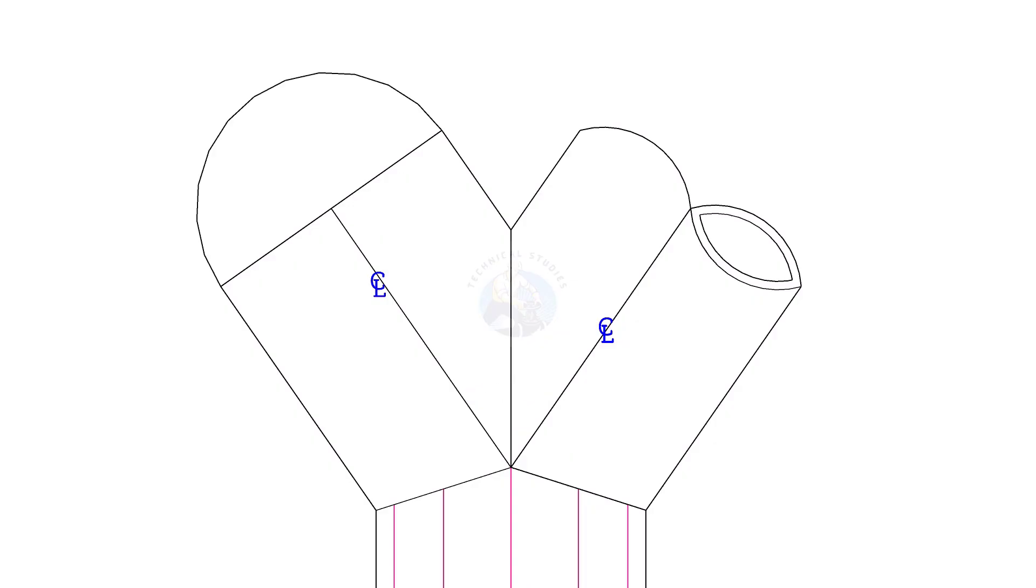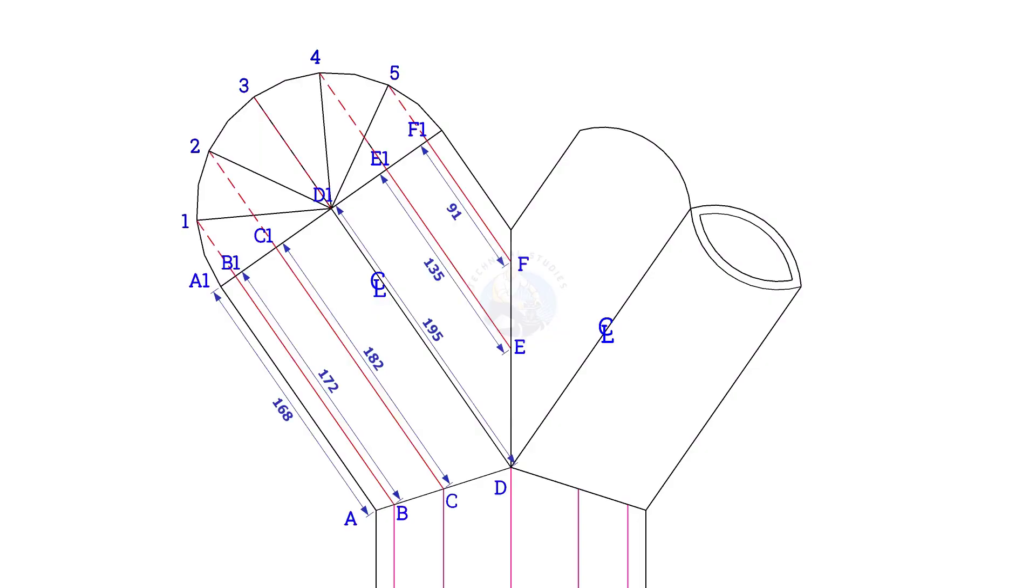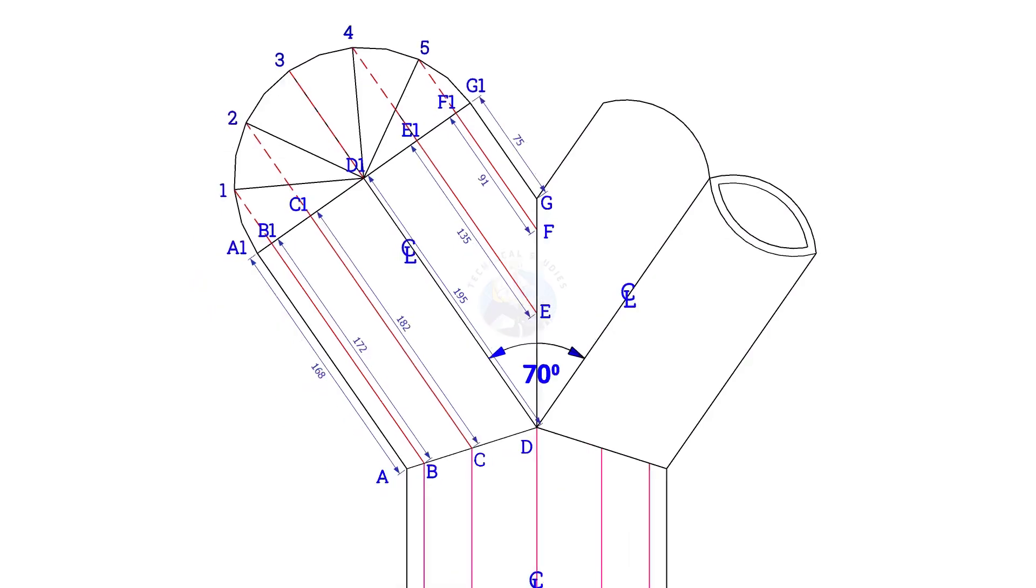To lay out the true length of the branches, the process is the same. Draw a half circle and divide it into six parts. Draw perpendicular lines as shown. Note down the lengths.